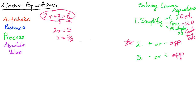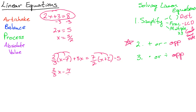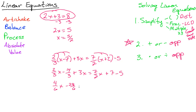Let's walk through a big example with a little bit of everything: (2/3)x − 7 + 3x = (7/2)x + 2 − 5. It has parentheses, so we distribute and get (2/3)x − 14/3 — be careful that the 7 does not multiply the bottom, it's 7 over 1 — plus 3x = (7/2)x + 7 − 5. Now we have fractions, so we multiply through by the least common denominator, which is 6.